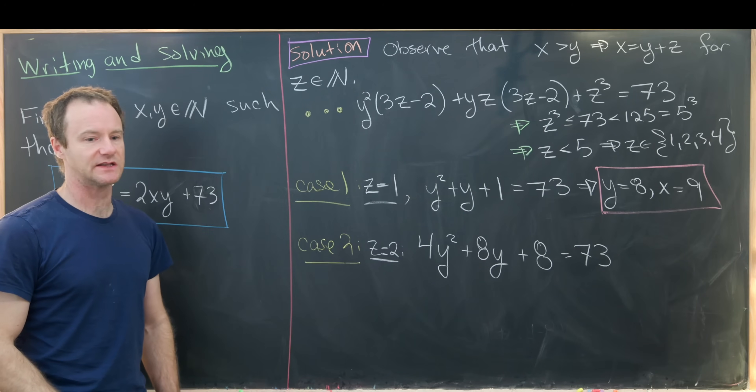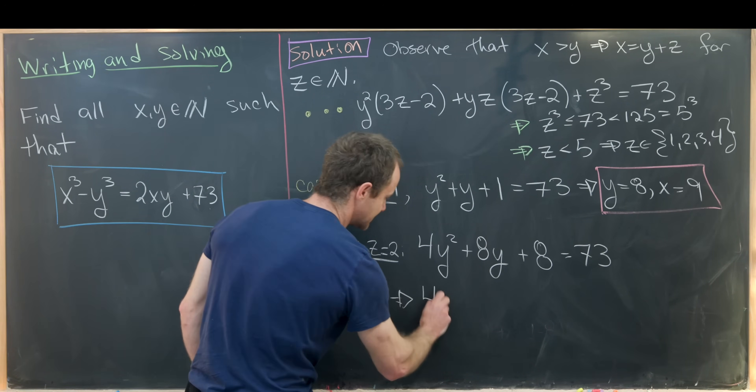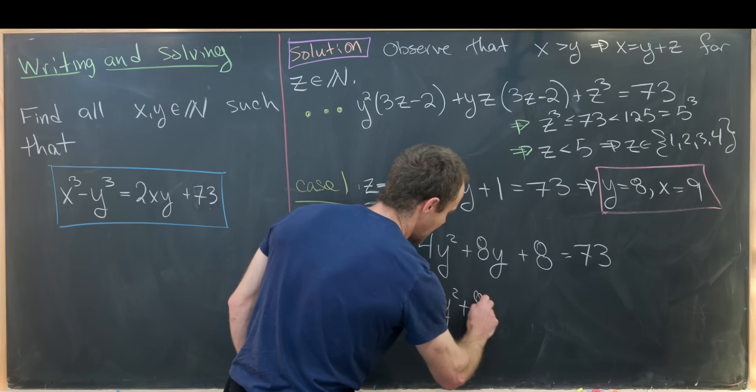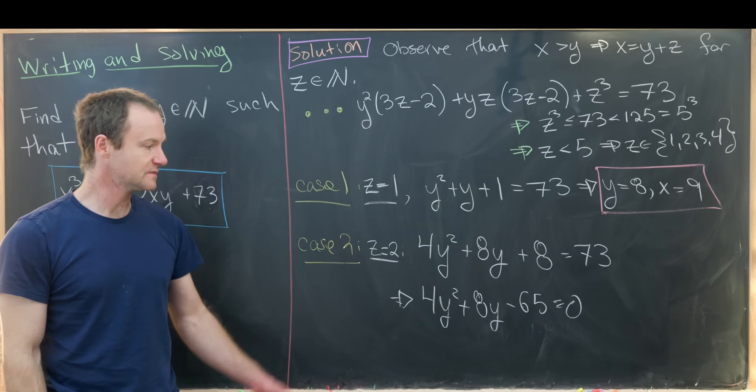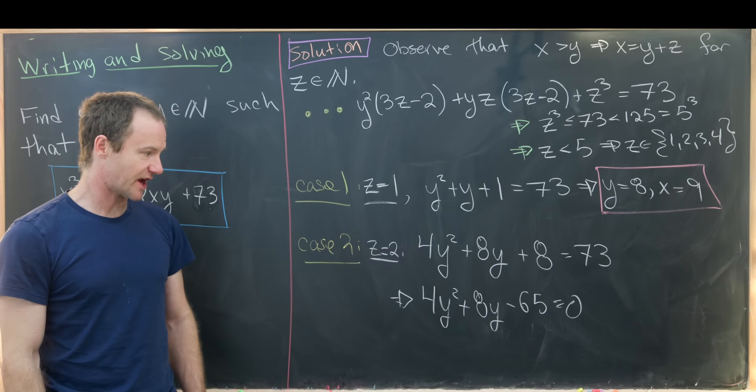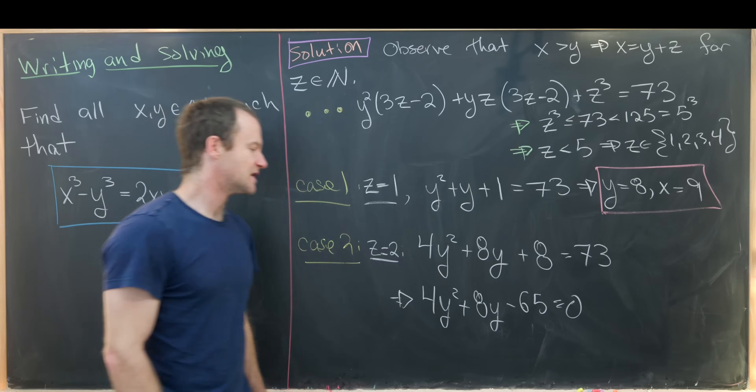So we have something that looks a little bit like that. But now let's notice that that reduces to 4y² + 8y - 65 = 0.